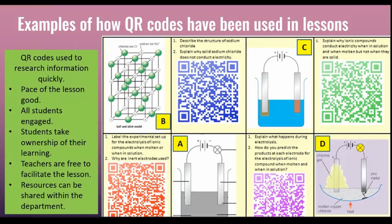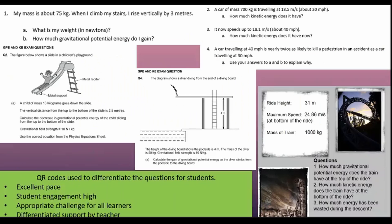Here are some examples I've used in the classroom. In one example, students were using QR codes to research information quickly and then sharing it with other people within their group. In another example, a QR code was used to link different exam questions given to students based on their ability, so tasks could be differentiated based on the QR code that the child receives.